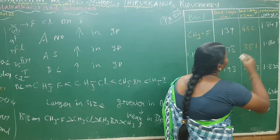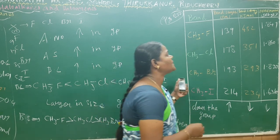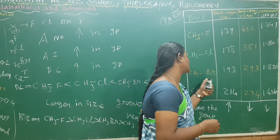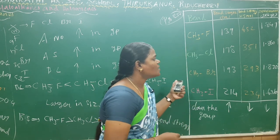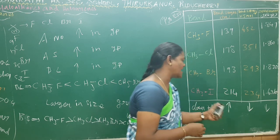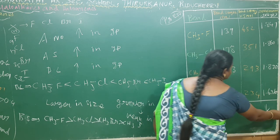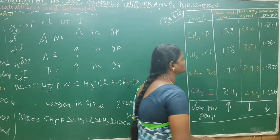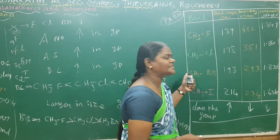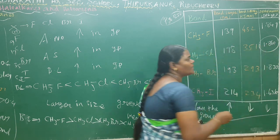We will now discuss dipole moment values. The dipole moment of fluoromethane is 1.847 D, chloromethane is 1.860 D, bromomethane is 1.830 D, and iodomethane is 1.636 D. These values are important for one-mark questions — for example, the dipole moment of chloromethane is 1.86 D.